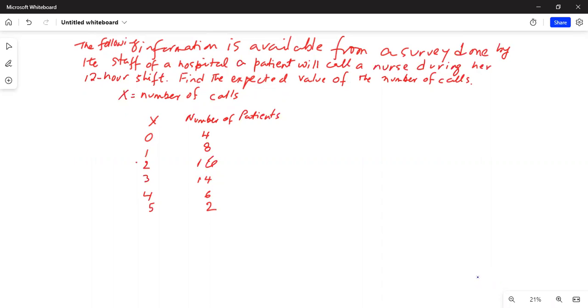So x is your number of calls. For example, number of patients who do not call at all is 4. Number of patients who call the nurse once is 8. Number of patients who call the nurse twice is 16 and so forth. This is a discrete probability distribution.